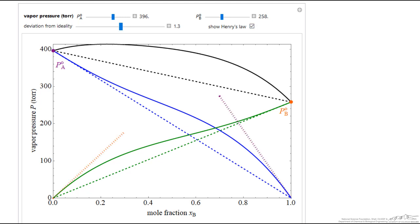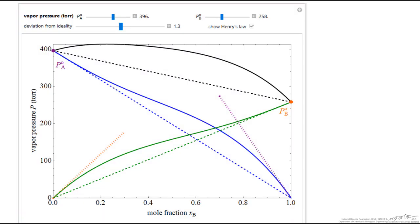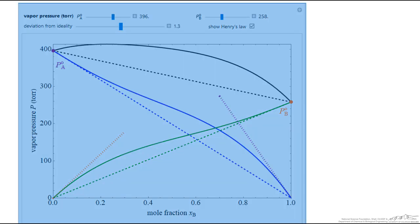If we check this box, then we see these dashed lines are Henry's Law, and the intercept would be the Henry's Law constant. Henry's Law is saying that at low concentrations of B, for example, in the region at low B concentrations...